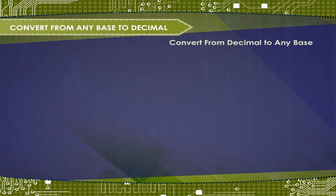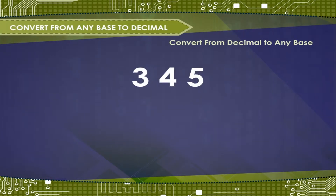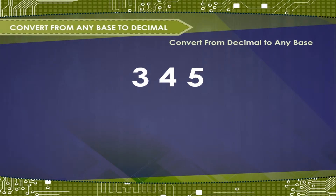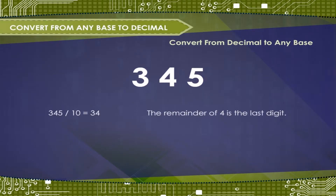Convert from decimal to any base. Let us analyse the decimal number 345 again and convert it to decimal notation. Think about what you do to obtain each digit. To extract the last digit, you divide the given number by its base 10. The remainder of 4 is the last digit.